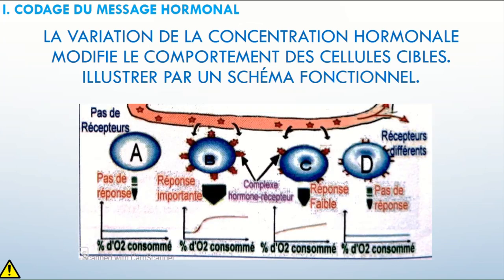Je peux le dessiner de cette façon. Voilà les hormones qui circulent dans le sang. Voilà quatre types d'organes ou bien de cellules : l'un n'ayant pas de récepteurs, le dernier ayant des récepteurs mais différents qui ne peuvent pas fixer cette hormone. Les deux organes B et C ont les bons récepteurs. L'organe B a les récepteurs spécifiques en grande quantité ; C a les récepteurs spécifiques mais en petite quantité.